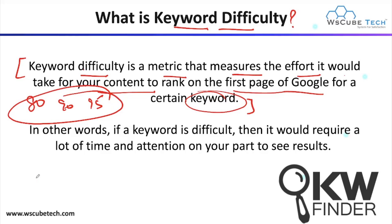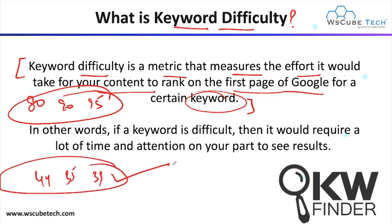If your keyword difficulty is around 34, 35, or 39, that is a fine keyword for you — you have to do less effort compared to other keywords just to rank your website on Google's first page. If a keyword is difficult, it would require a lot of time and attention to see your result. That's why when choosing a keyword, we prefer keywords where the keyword difficulty is low.